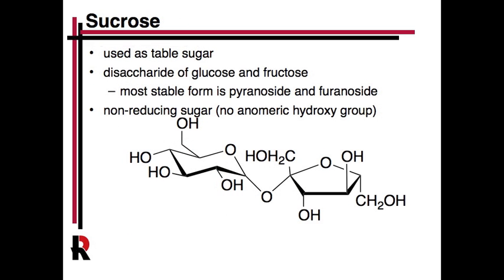Everybody's heard of sucrose — it's the main component of table sugar and it's a disaccharide, meaning two carbohydrate monomers, or monosaccharides. In this case, it's glucose and fructose. Glucose is typically drawn in the pyranose form and fructose in the furanose form. It's what we call a non-reducing sugar. The interesting thing about sucrose's linkage is that two anomeric positions are coupled together, rather than the typical arrangement where an anomeric position is attached to a regular hydroxyl on the other. Because of this, it's a non-reducing sugar and is also a bit more stable.